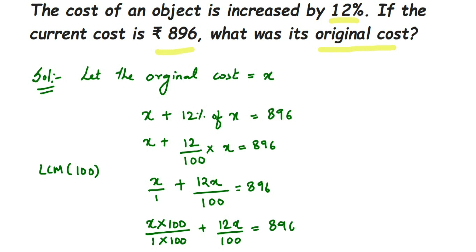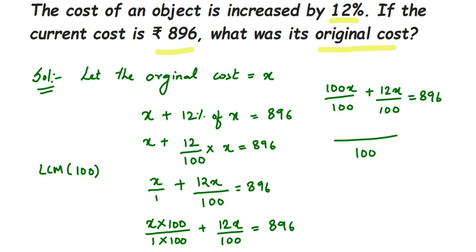Now the denominators are the same, so we add the numerators. In the denominator we have 100, and in the numerator we get 100x plus 12x. Whenever the denominators are the same, we add the numerators — that is why we changed the denominator to 100. So we have (100x + 12x)/100 equals 896.